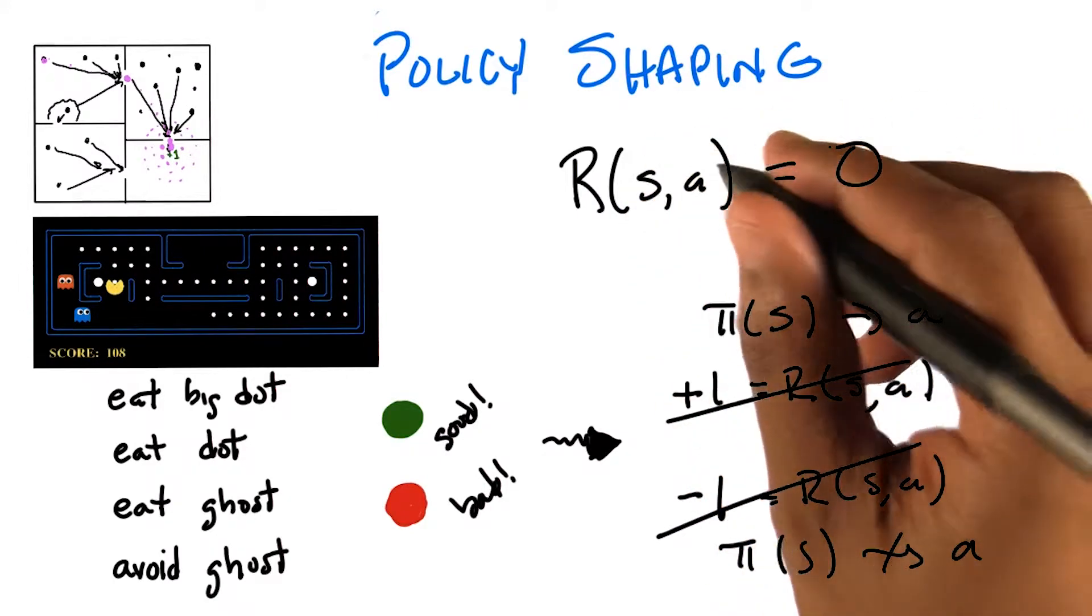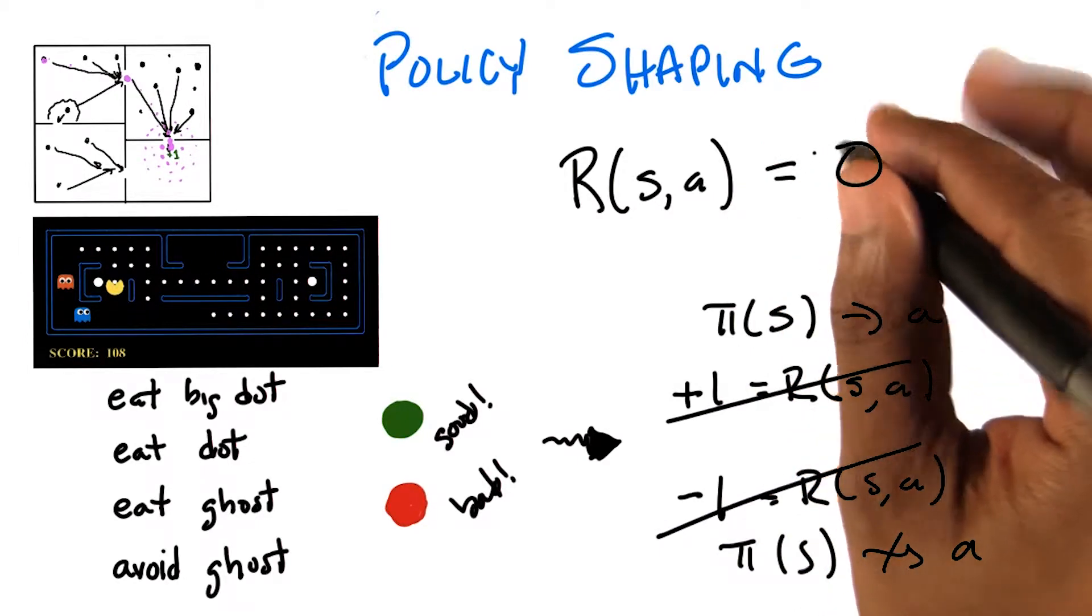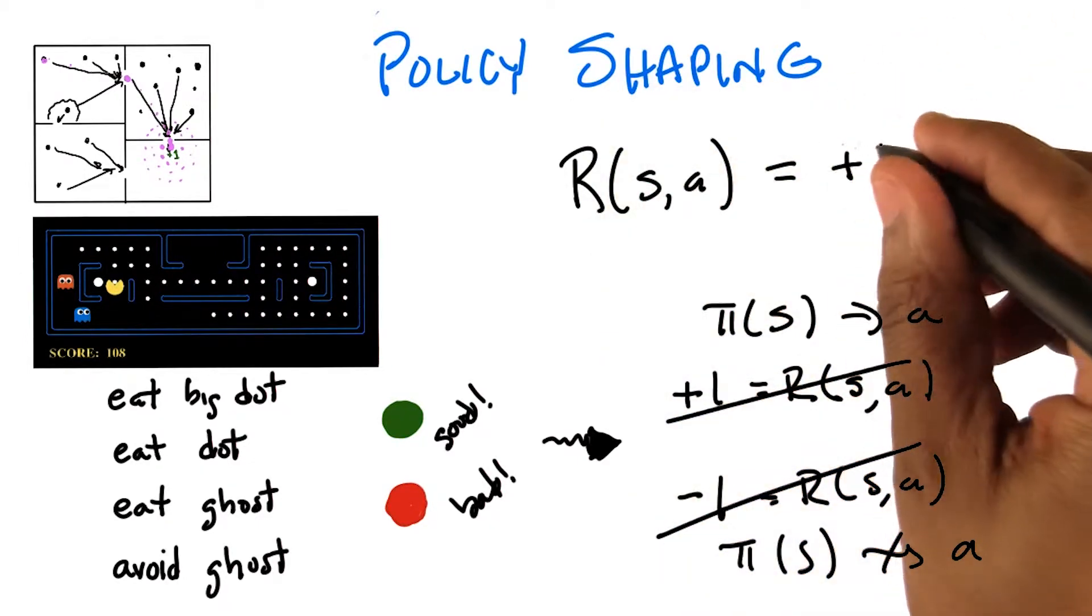And what you said is, no, this is the wrong answer, the wrong value. It should not be zero here. It should actually be something else. It should be, I don't know, three.